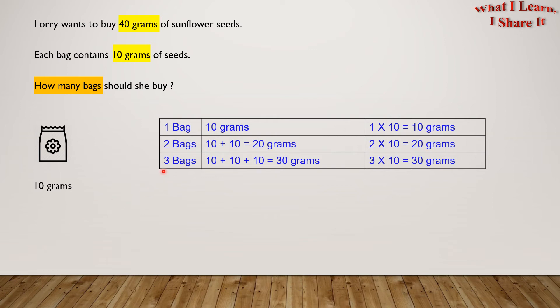So we have to add another bag. 10 plus 10 plus 10 equals 30 grams. 3 times 10 equals 30 grams. But that's still not 40 grams.